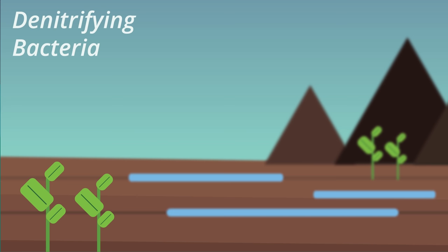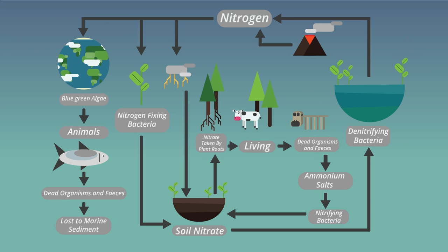So from this video, you should now understand how the nitrogen cycle works. Nitrogen is essential to life and so needs to be fixed in nitrates for plants and therefore animals to access it.